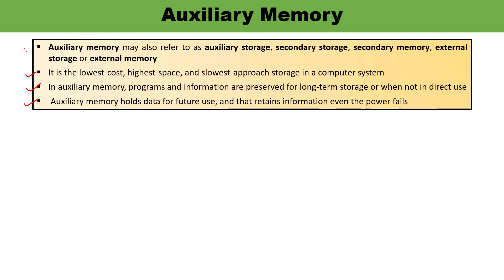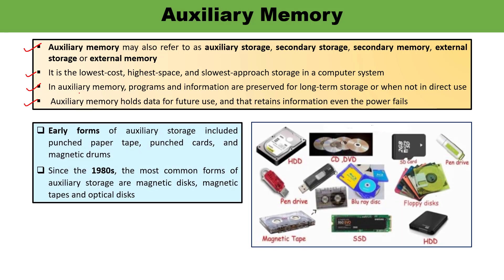Auxiliary memory is also known as auxiliary storage, secondary storage, secondary memory, external memory, and external storage. In earlier forms, auxiliary storage included punched paper tape, punched cards, and magnetic drums. From the 1980s onwards, some very popular auxiliary storage types are magnetic disc, magnetic tape, and optical disc.